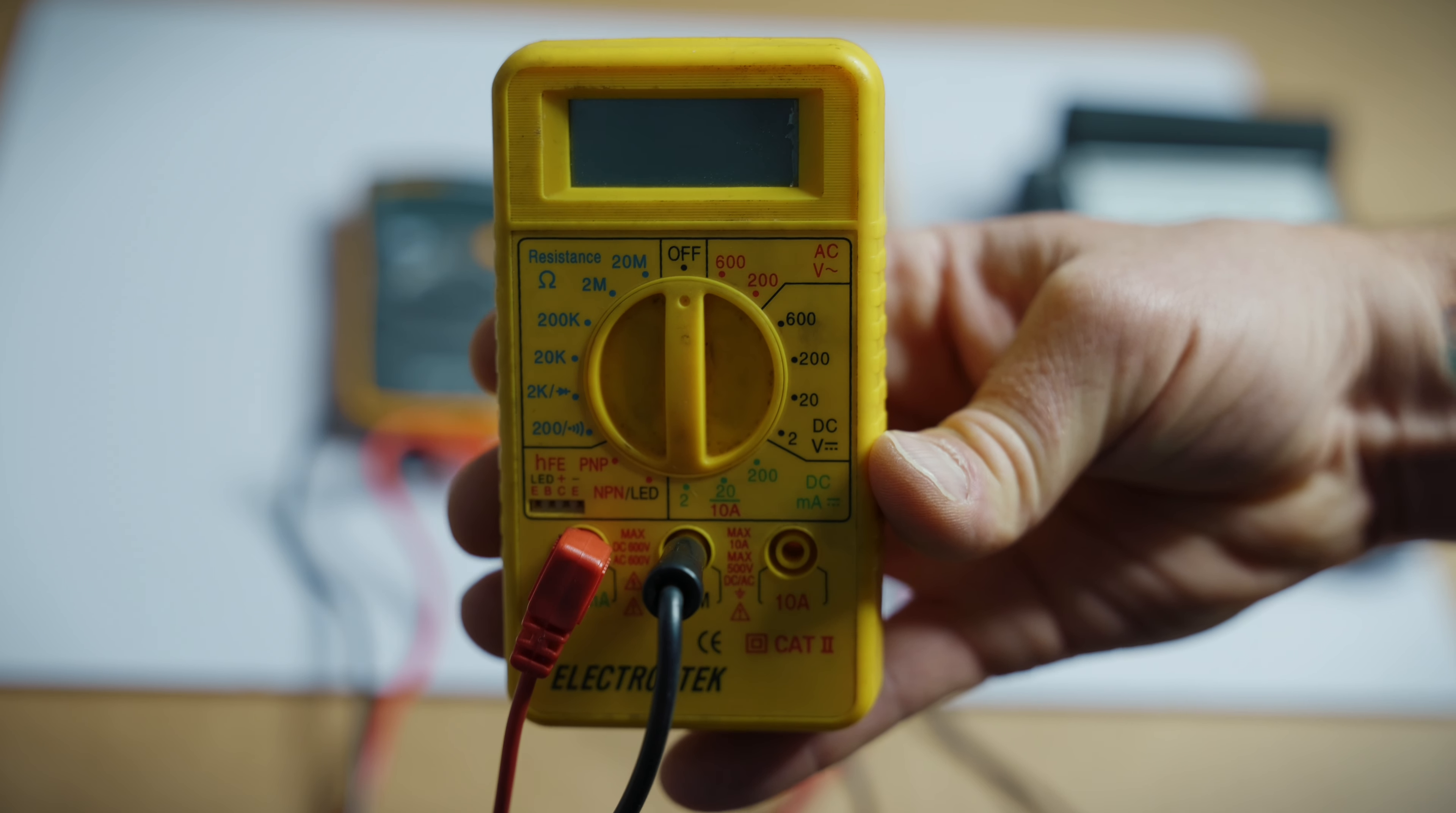Next up is your Fluke 87. Now this is a true RMS meter. It is also auto range. So for today's video, we are going to stick with the more expensive Fluke 87.